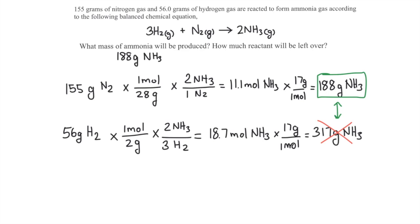The second part of the question asks how much reactant will be left over. Nitrogen is used up completely, so there will be some hydrogen left over. How much hydrogen is left over depends on how much was used in the reaction. We need to determine the amount of hydrogen used by comparing it to the amount of nitrogen used.